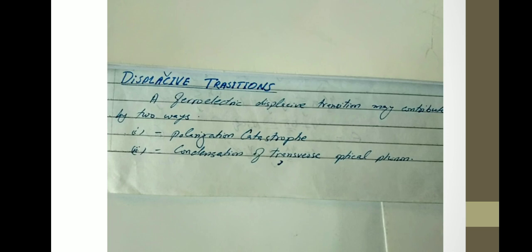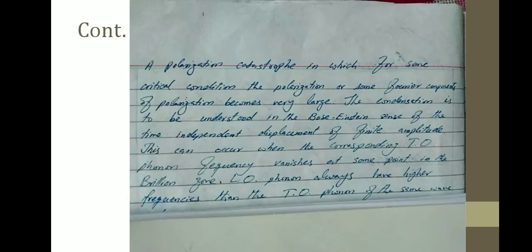Displacive transitions: a ferroelectric displacive transition may occur by two ways. First is polarization catastrophe, second is condensation of transverse optical phonon. A polarization catastrophe is when, for some critical condition, the polarization or some Fourier components of polarization becomes very large. The condensation is to be understood in the Bose-Einstein sense of time-independent displacement of finite amplitude. This can occur when the corresponding transverse optical phonon frequency vanishes at some point in the Brillouin zone. Longitudinal optical phonons always have higher frequencies than the transverse optical phonons of the same wave.